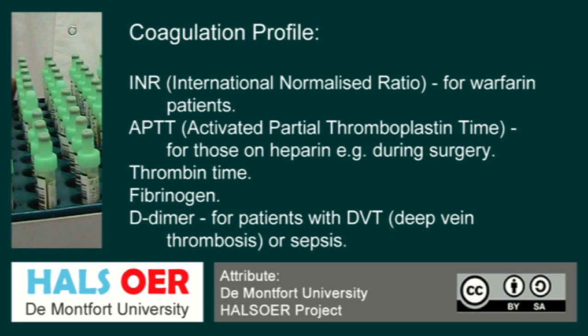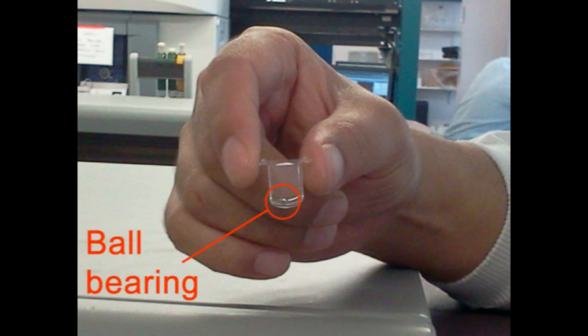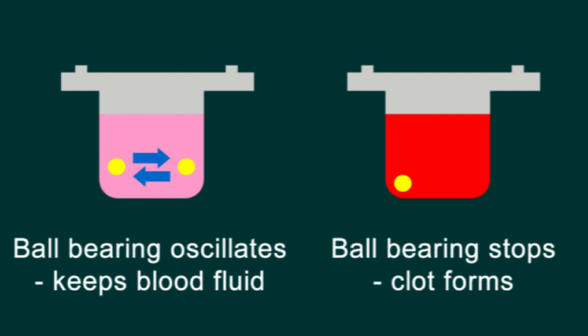What we have here is a little cubet with a ball bearing inside which oscillates when you send a current to it. Once the ball bearing stops oscillating, what you have is clot formation. What we are doing is identifying clot formation, and that will tell us the end point of the test.